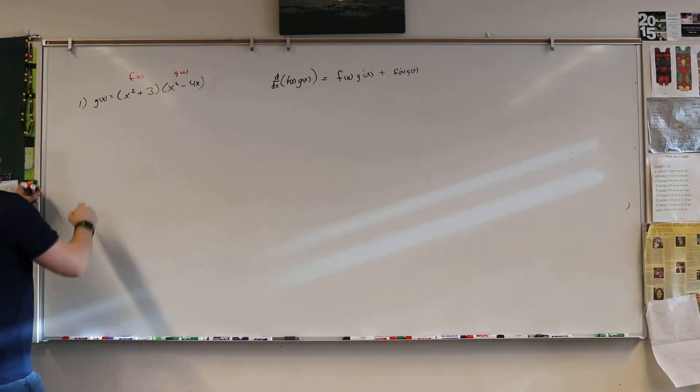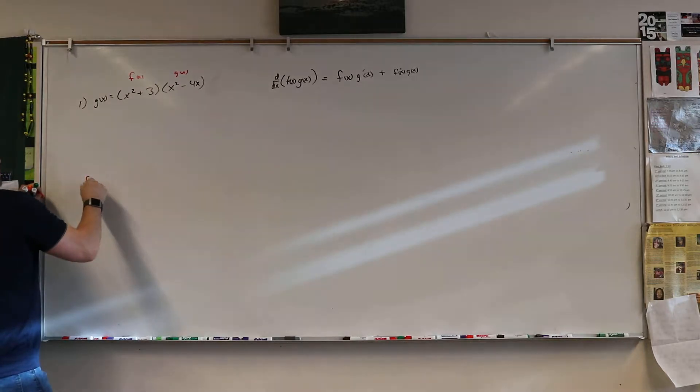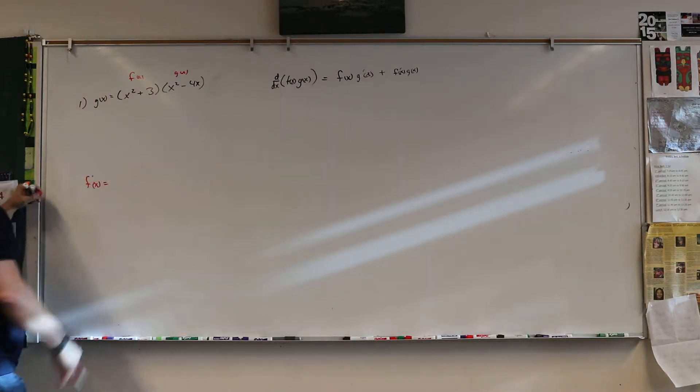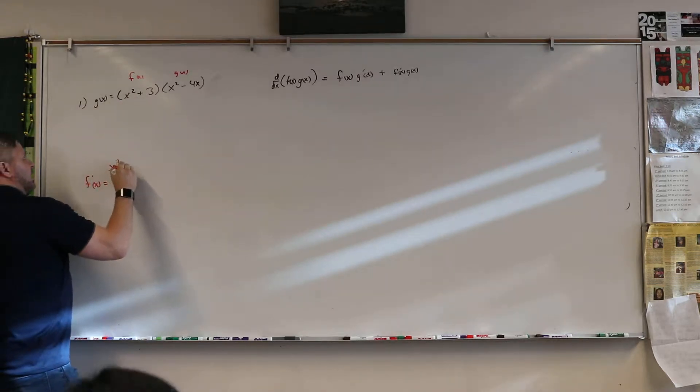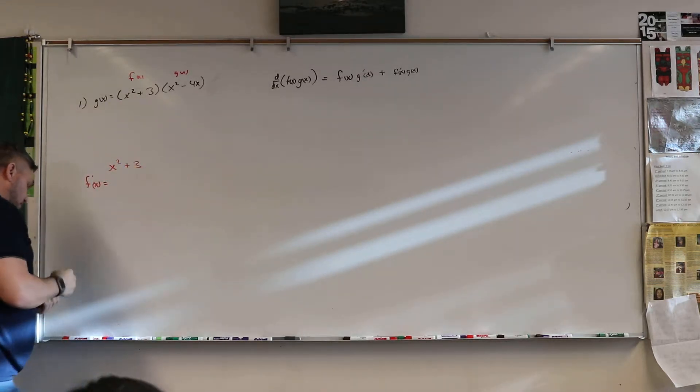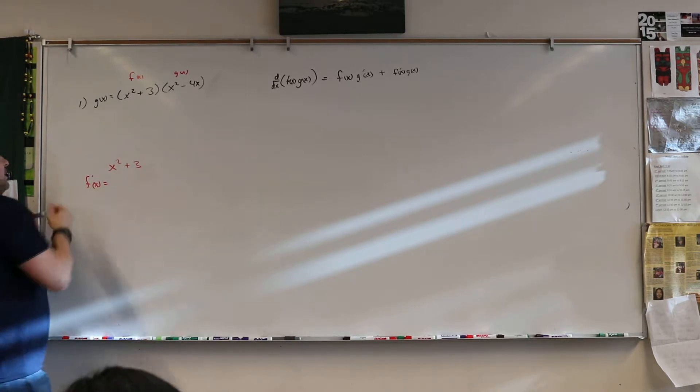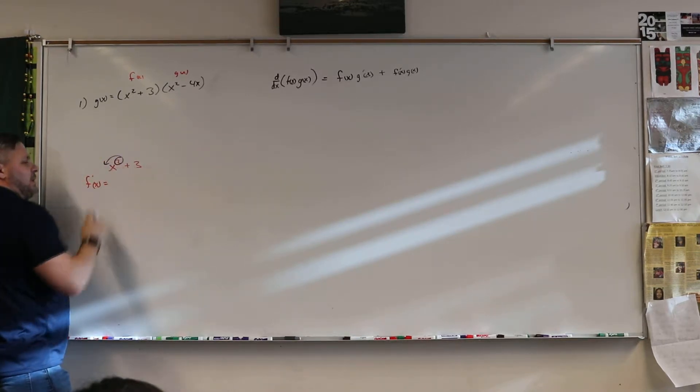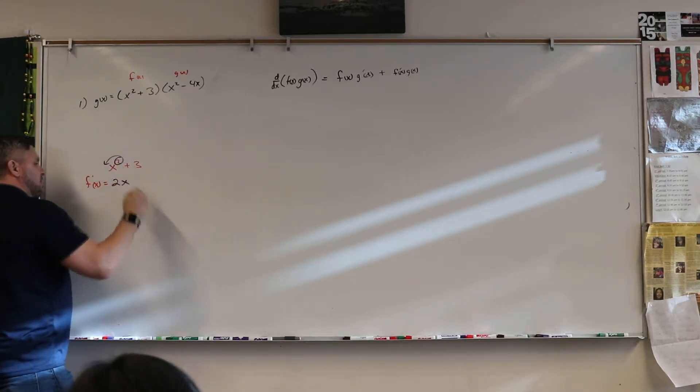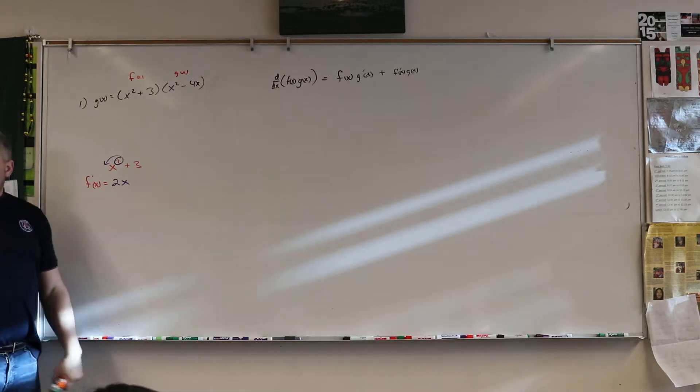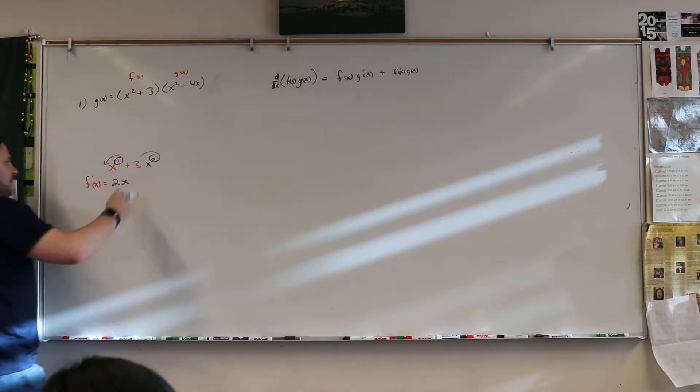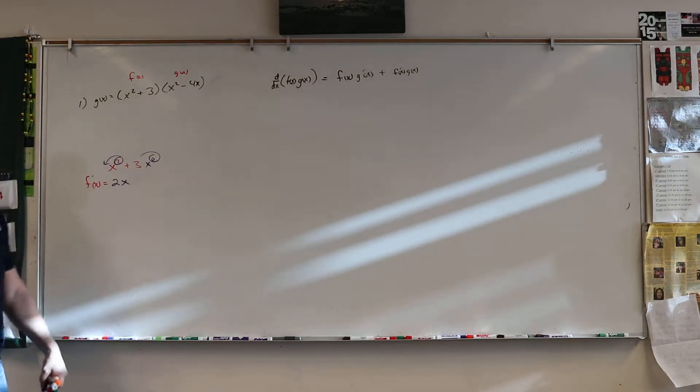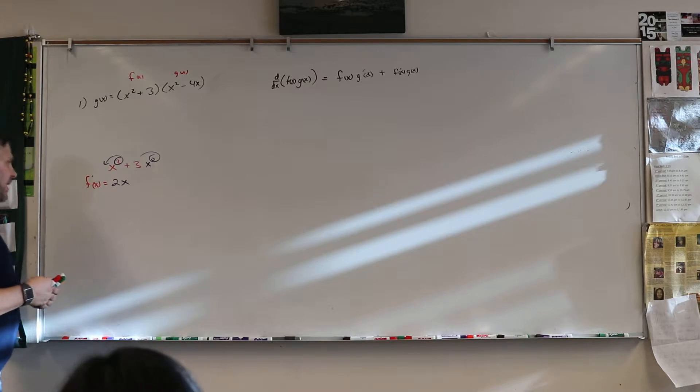So real quickly I just want to know what's the derivative of f of x. So that means we're going to take this x squared plus 3. So we're going to multiply. We get 2x, and the 3 drops away. Remember there's the x to the 0 and the 0 kills the 3. So that's why it's gone.